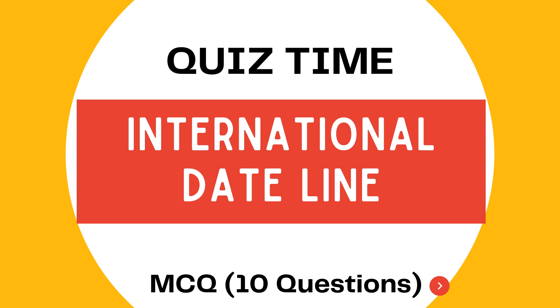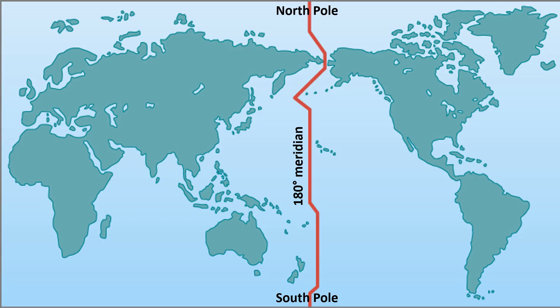I am giving you a brief definition of the international dateline. The international dateline is an imaginary line that runs from the North Pole to the South Pole, roughly along the 180 degree meridian. It plays a critical role in distinguishing one calendar day from the next, ensuring that the world's timekeeping is synchronized.